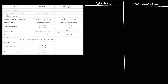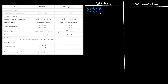The commutative property of addition says if A and B are real numbers, then A plus B is equal to B plus A. All this is saying is if you're adding up numbers, doesn't matter if they're positive or negative, you can move them around. So if I had 3 plus 5, that's equal to 8. If I switch these around and did 5 plus 3, that's still equal to 8.